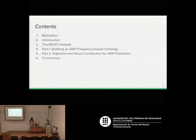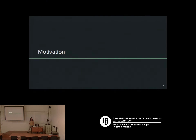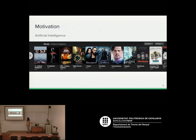I'm going to start by explaining a bit of motivation and introduction on the topic, then do a brief overview of the dataset, explain the two independent parts of the project, and finish with conclusions. So let's start with motivation — I'm going to be talking about artificial intelligence and computers capable of understanding human emotions.